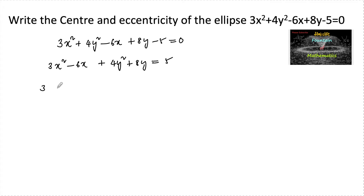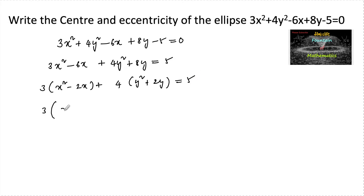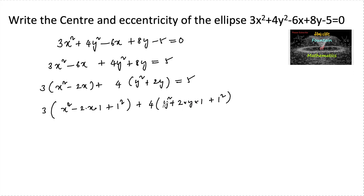We can take 3 common: 3(x² - 2x) + 4(y² + 2y) = 5. Completing the square: 3(x² - 2·x·1 + 1²) + 4(y² + 2·y·1 + 1²), where we have added 3 times 1² and 4 times 1² to both sides.